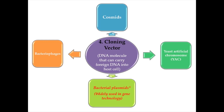The fourth tool in recombinant DNA technology is the cloning vector, or vector. A vector is a DNA molecule that can carry foreign DNA into host cells. Bacteriophages and circular DNA molecules called plasmids are two examples of vectors. Bacterial plasmids are widely used in gene technology — they are circular DNA found inside bacteria such as E. coli. Researchers introduce plasmids into bacteria by a method called transformation. Other vectors include cosmids and YACs — yeast artificial chromosomes.